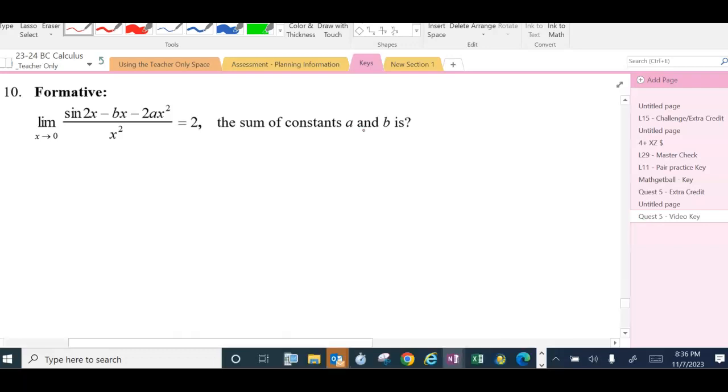We've been asked to find the constants a and b such that our limit as x approaches 0 will be 2. As I try to plug in 0, I get 0 minus 0 minus 0 all over 0.